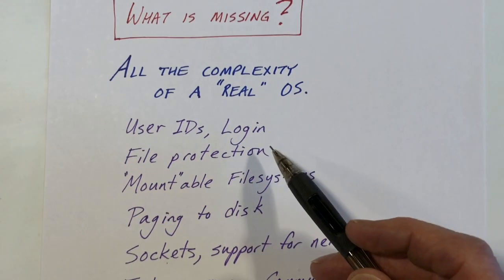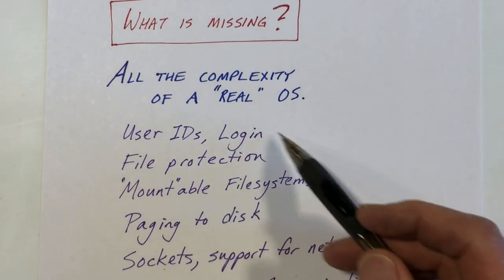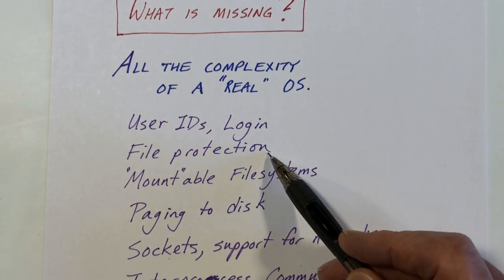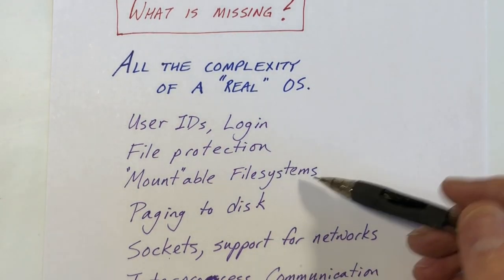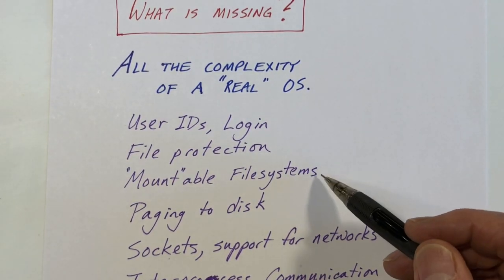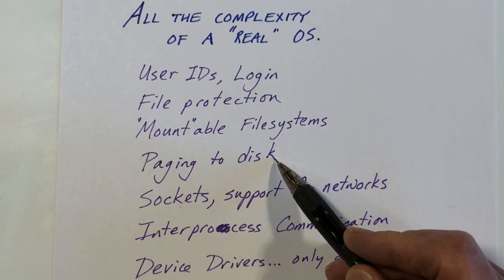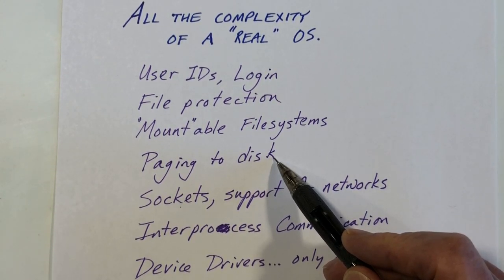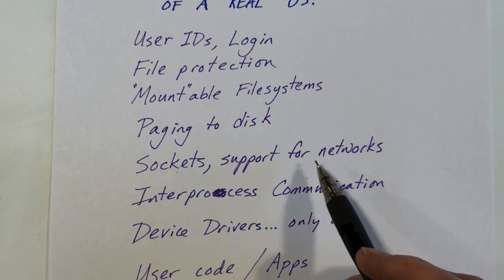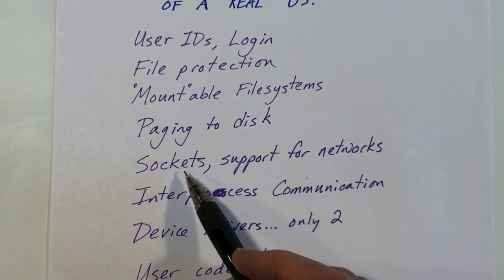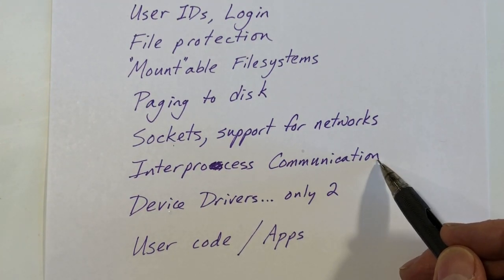But there are some things that are missing from your typical Unix or Linux system. There are no user IDs and no login sequence, no verification. There are no protection bits associated with files. You know, the read, write, execute protections, that's not here. The mount command is just not available, so you just have one file system. In a real system, the virtual address spaces can be paged out to disk so that you can run more processes than will fit in physical main memory; that's not present in XV6. There's no support for networks, no sockets or anything like that. In fact, there's no way for processes to communicate or synchronize amongst themselves.